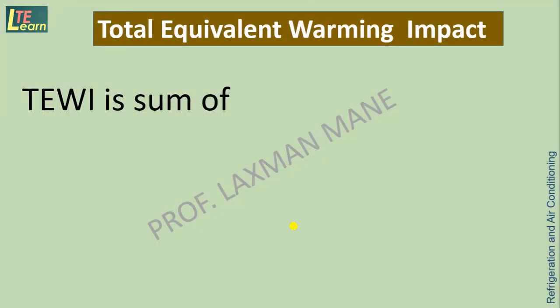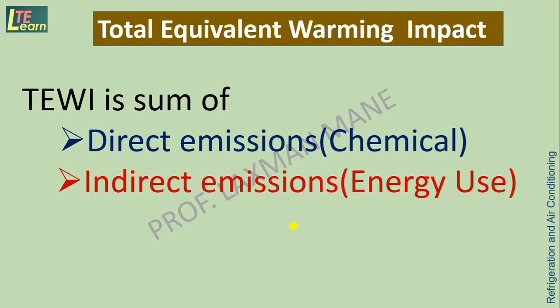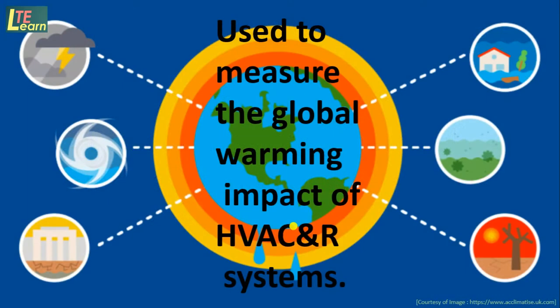Total equivalent warming impact, i.e. TEWI, is the sum of direct emissions from chemicals and indirect emissions from energy use. It is used to measure the global warming impact of HVAC and refrigeration systems.